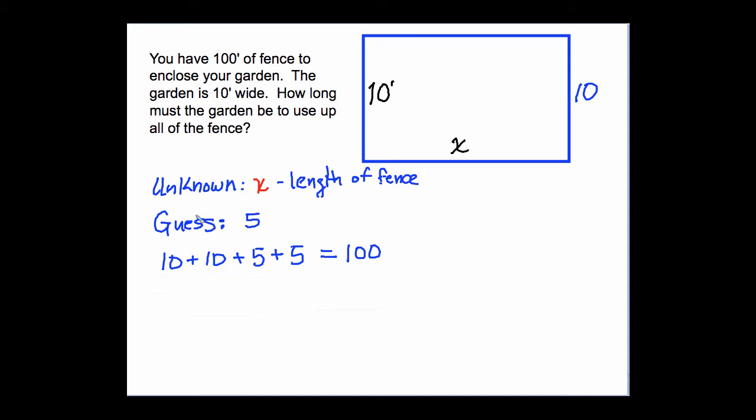Now, 10 plus 10 plus 5 plus 5 equals 100. No, that's not true. So 5 is not a solution. This is not correct. But that's okay. Let's take another guess.